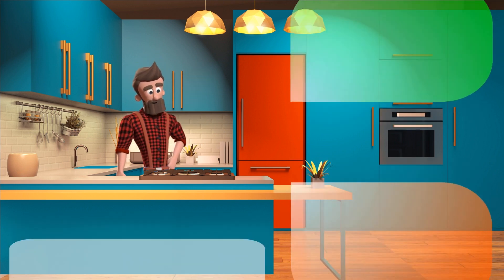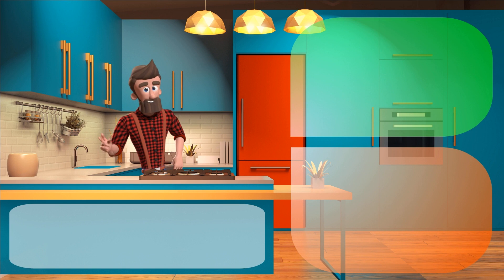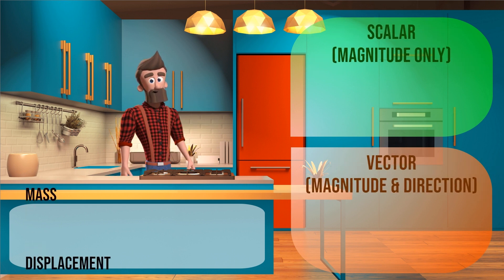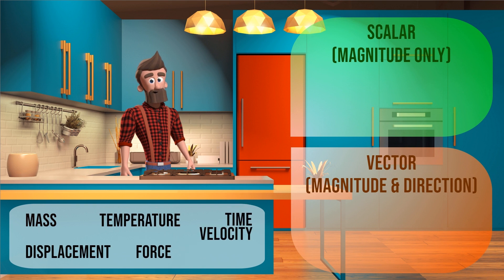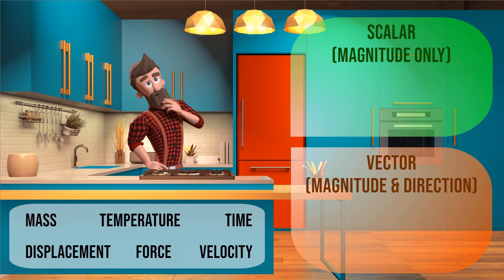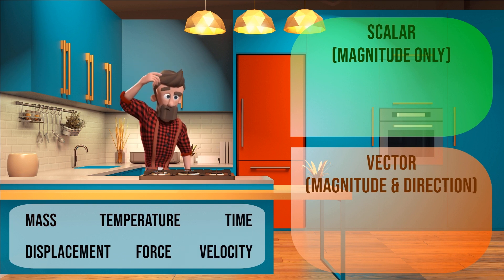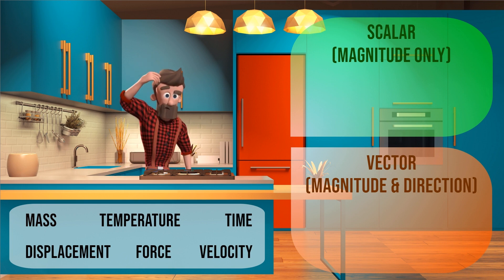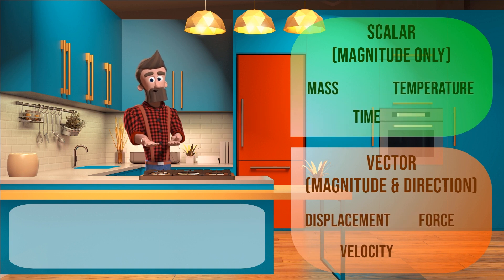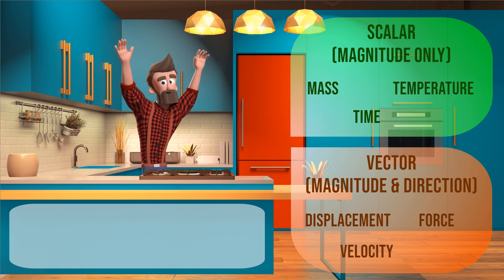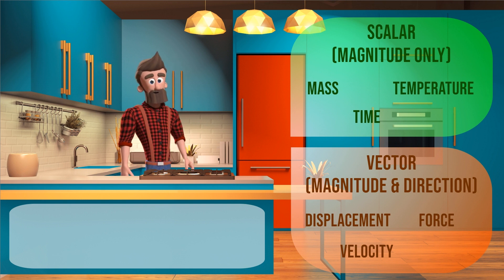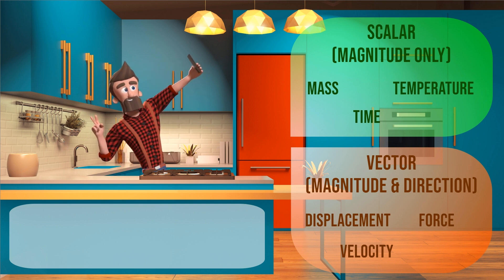So, here we have two types of physical quantities: the scalar and vector quantities. Scalar quantity only has magnitude. But vector quantity has both magnitude and direction. Below are the six physical quantities we learned from the kitchen. The mass, temperature, and time are scalar quantities as they only have magnitude. But the displacement, force, and velocity are vector quantities as they have both magnitude and direction.